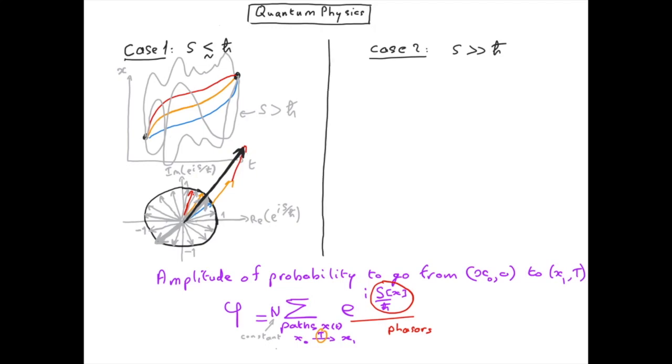Let's now look at the second case in which all the paths will have an action much larger than h-bar. That would be the case for a classical system. Let's put some numbers: for instance, if I take a mass of one kilogram traveling over one meter during one second, the typical order of magnitude of the action will be one kilogram meter squared per second.